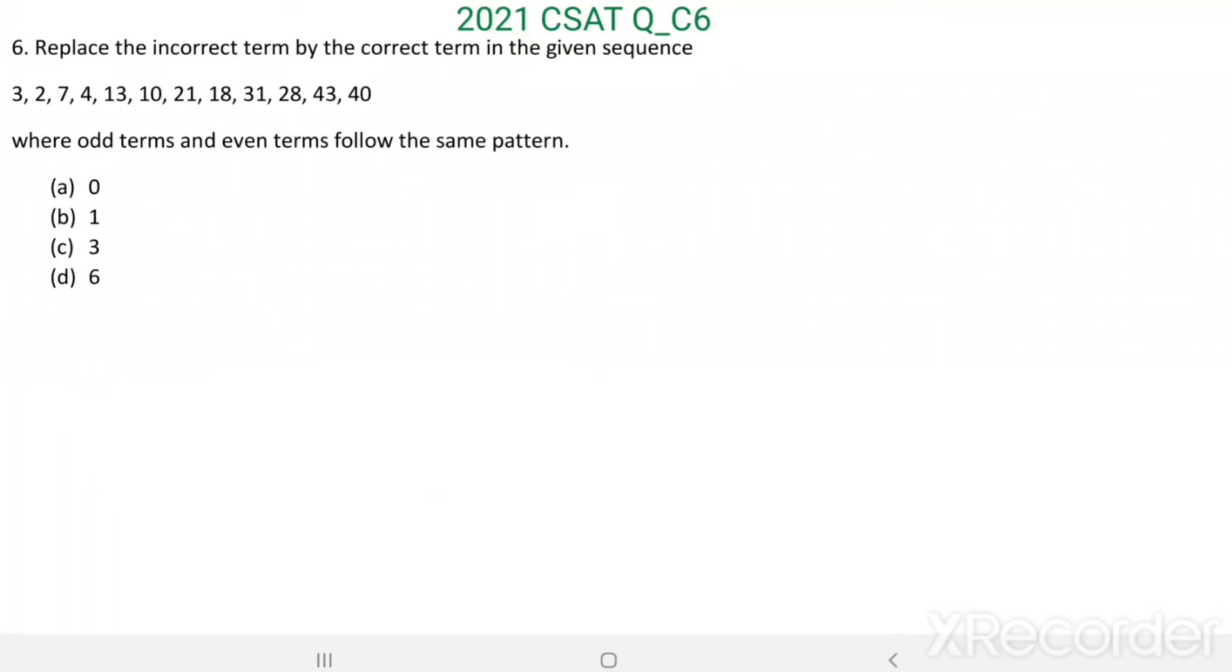Question number six: Replace the incorrect term by the correct term in the given sequence 3, 2, 7, 4, 13, 10, 21, 18, 31, 28, 43, 40, where odd terms and even terms follow the same pattern. Here we have a series in which there are odd terms and even terms, both follow the same pattern, then replace the incorrect term by the correct term.